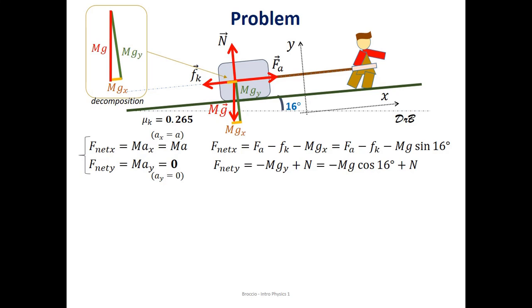Okay, after this we are pretty much ready to solve for normal force. Substitute in the expression for kinetic friction, because f sub k is the coefficient mu k times the normal force. We get f_a minus mu k mg cosine 16 degrees minus mg sine 16 degrees equals ma.